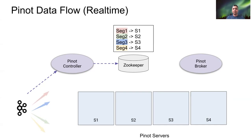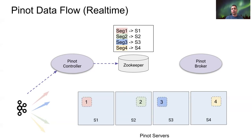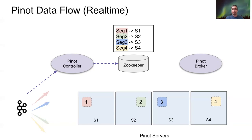The controller has also assigned these segments to the four servers. It will use Apache Helix to write this ideal state into Zookeeper, at which point the four servers will start reading from Kafka for the corresponding partition and creating a local segment. At some point the segment will be complete, and then the controller will create the next set of segments and so on.